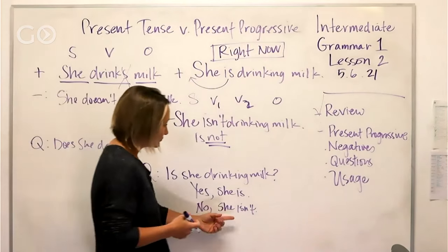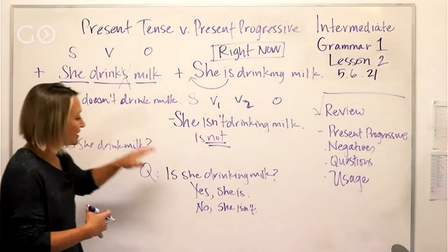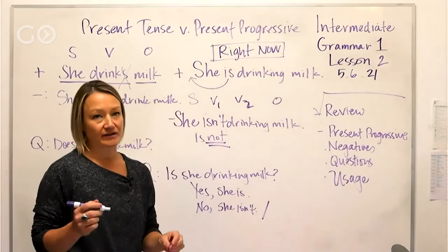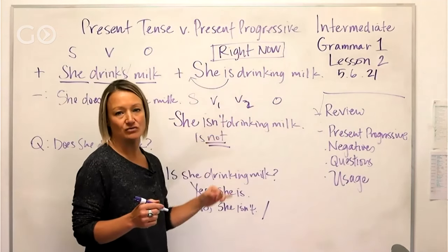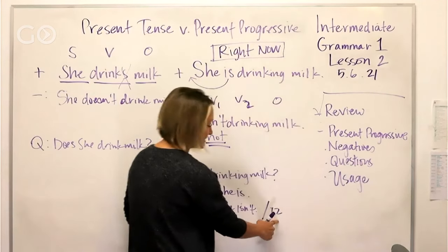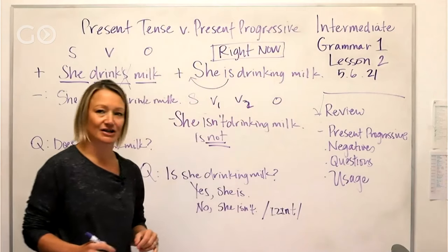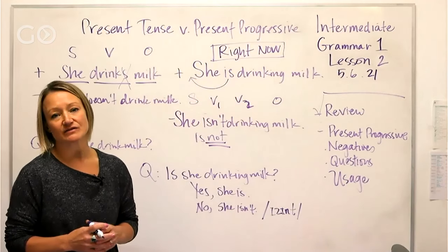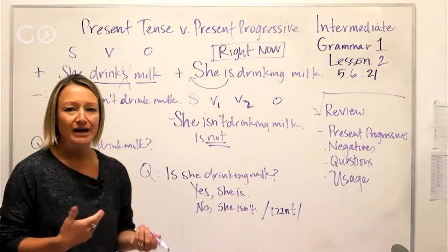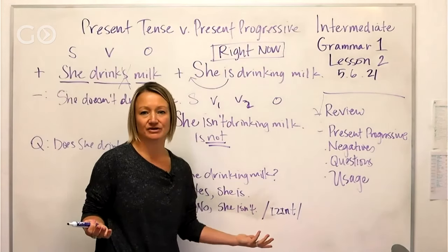We talked about the pronunciation of contractions like 'doesn't.' Let's look at 'isn't.' It gets a little tricky because you have that I-N-T sound at the end. It sounds like: ih, Z sound, ih, N, T — 'isn't.' Practice that sound so when you use this tense, people understand exactly what you're saying.